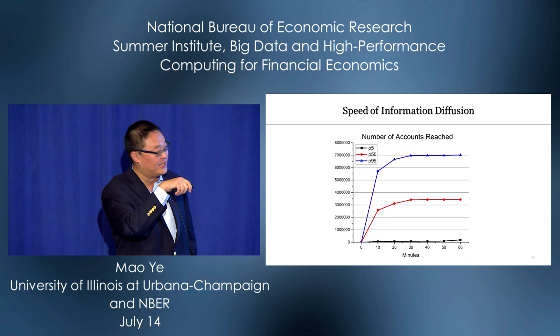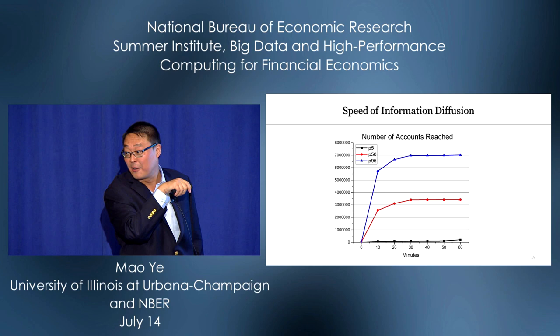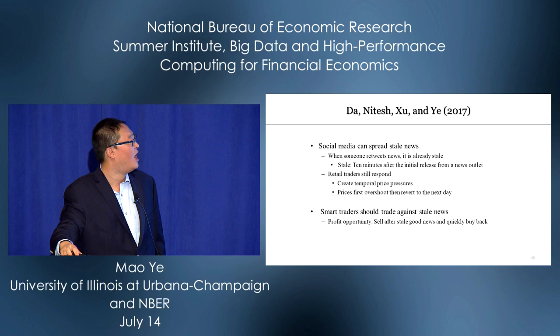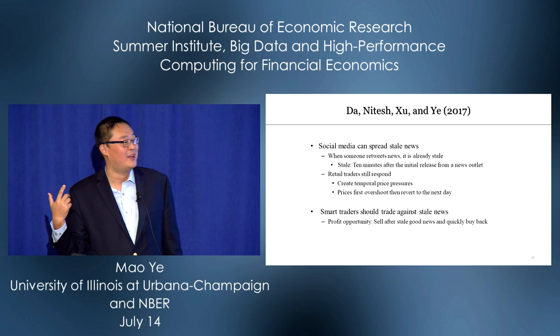Tweets are not a perfect measure, but based on the number of followers, we can construct the speed of information diffusion — for example, the 5th percentile, median, and 95th percentile of how many people the information reaches. What do we find? There are lots of functions of social media, but we find one: social media sometimes spreads old news.